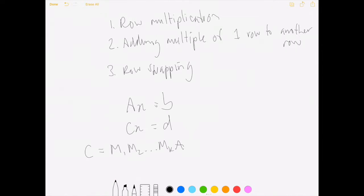And then we've got D, which is just our original vector B, multiplied on the left by, again, these elementary matrices.